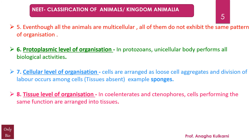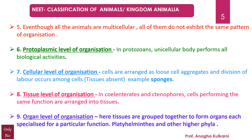Tissue level of organization is seen in cnidarians and ctenophores, in which the cells performing the same function are arranged into tissues. Organ level of organization: here, tissues are grouped together to form organs, each specialized for a particular function. Platyhelminthes and other higher phyla show organ level of organization.